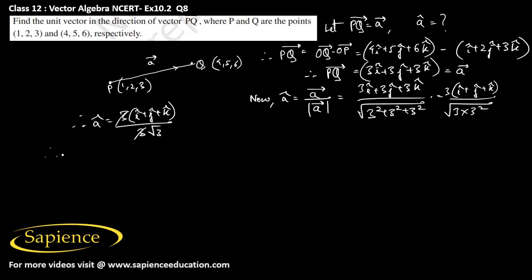3 and 3 will cancel therefore the required unit vector in the direction of PQ vector is given as A cap which is equal to 1 by root 3 I cap plus 1 by root 3 J cap plus 1 by root 3 K cap.